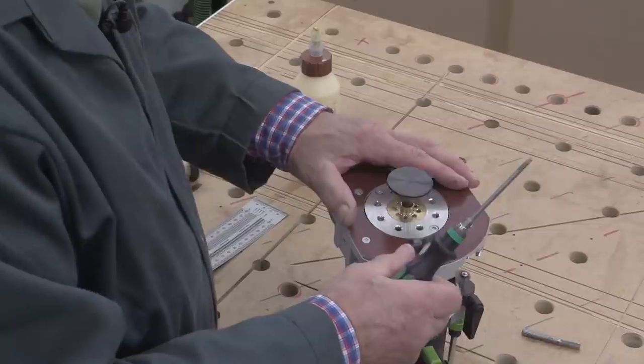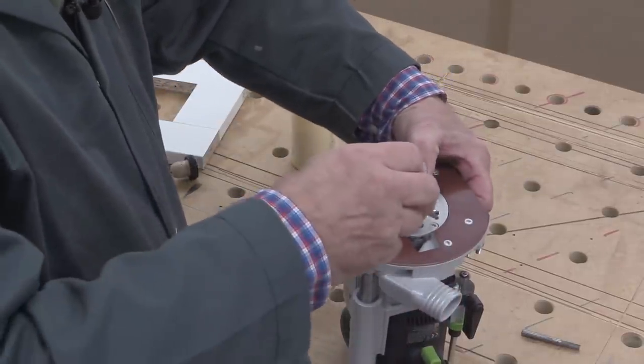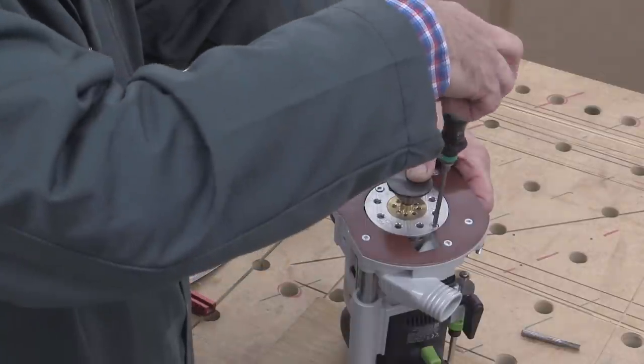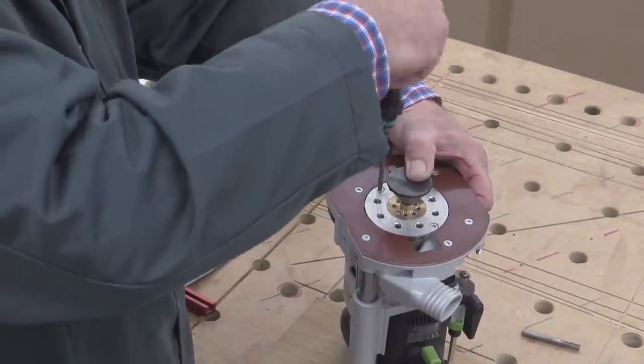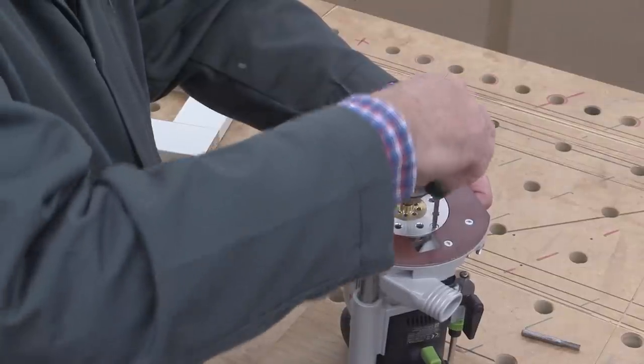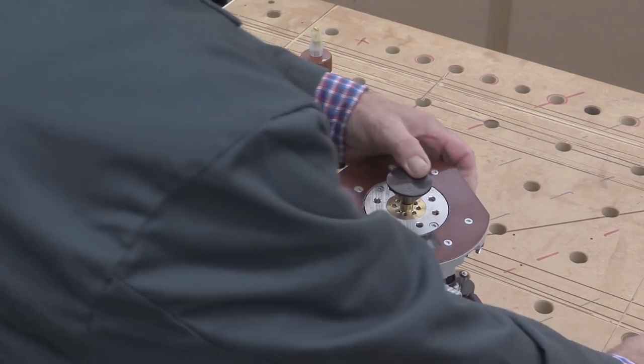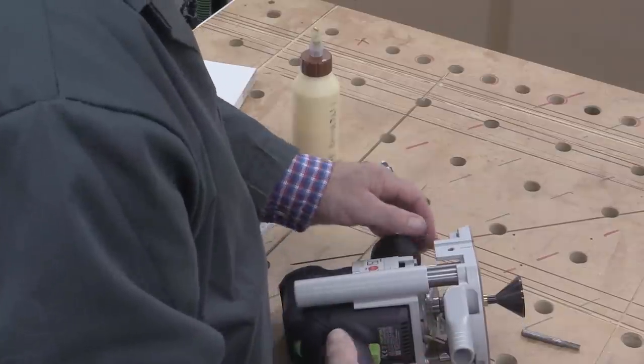And once the mandrel's held firmly, I can then bring this up, press down on my thumb, and then tighten up. If you miss this step out and end up with something that doesn't fit properly, you only have yourself to blame. So, that's that done. I can now remove the mandrel and put in the cutter that I need.